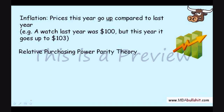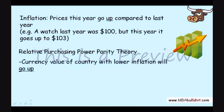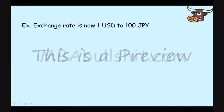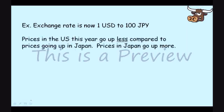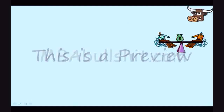Now, what is the relative purchasing power parity theory? This just means that, as an example, let's say that the exchange rate of the U.S. dollar to the Japanese yen right now is one U.S. dollar equals 100 Japanese yen. But the prices in the U.S. this year go up less compared to prices going up in Japan.